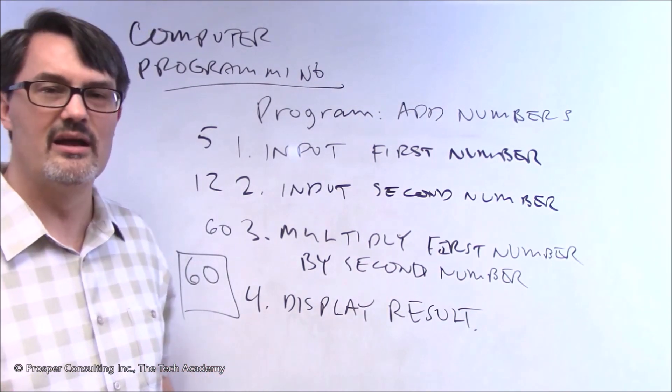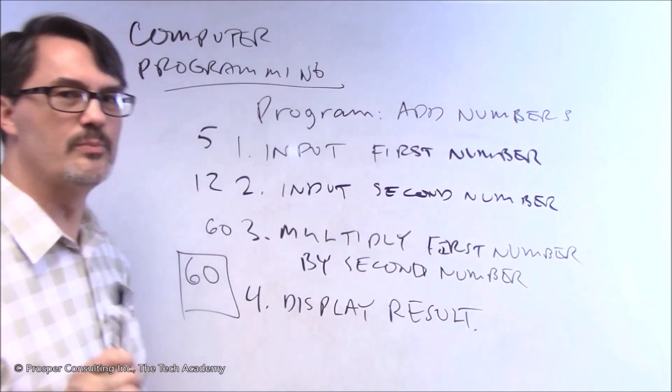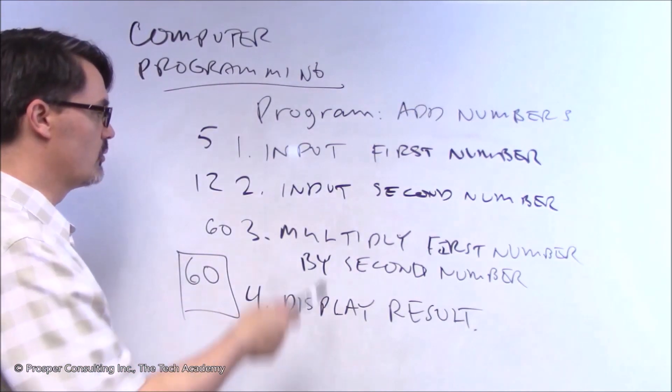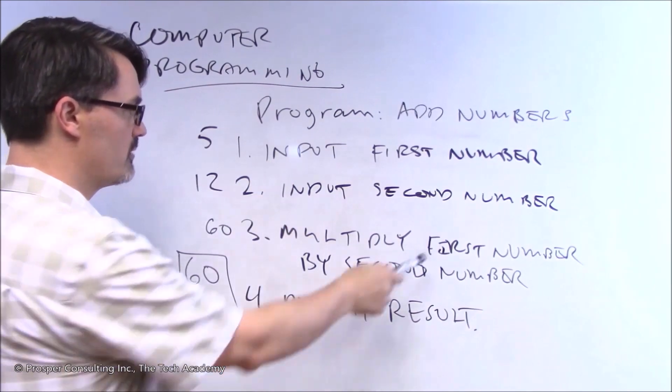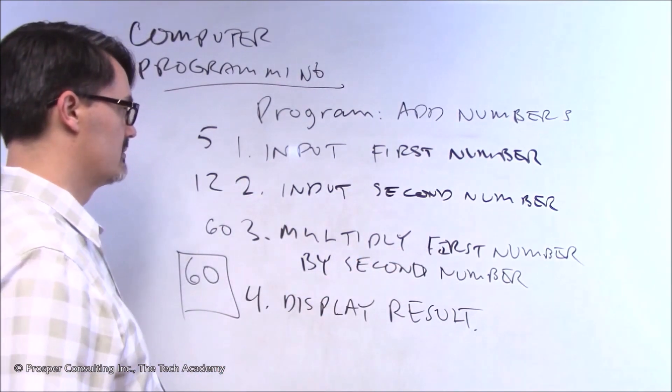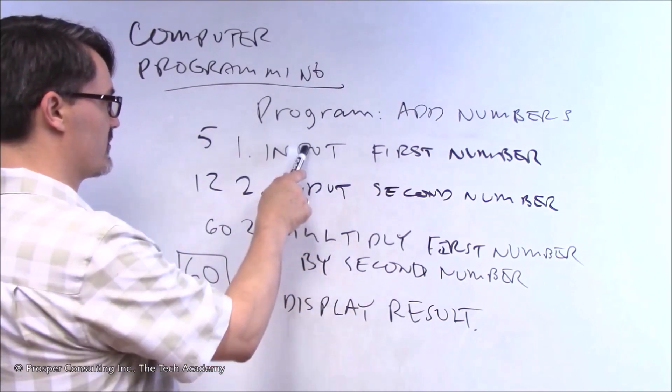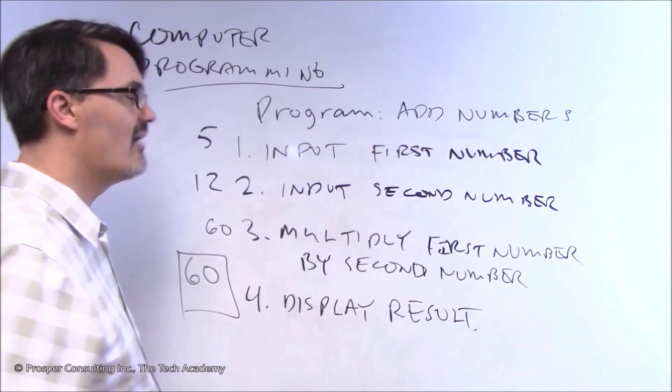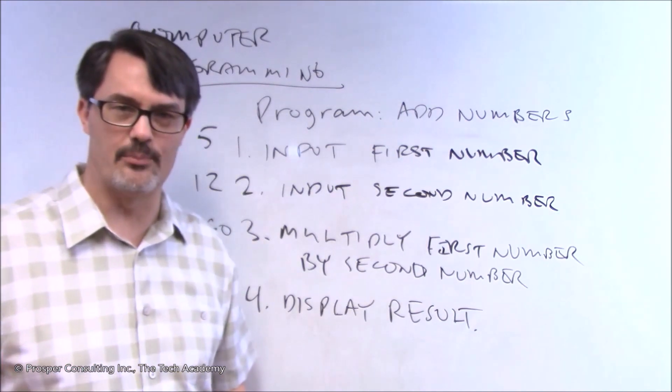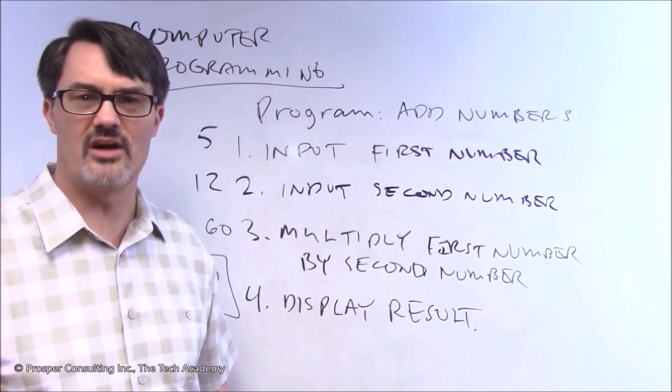Obviously, a very simple computer program. But let's look at this. The instructions here have to be executed in order. If you got to this step first and hadn't done the first two steps, there wouldn't be any data to multiply. Or if you did the first, the second, and then the fourth, you wouldn't have a result to display. Obviously, this is a very simple example. And this is the kind of thing you do in your head all the time.